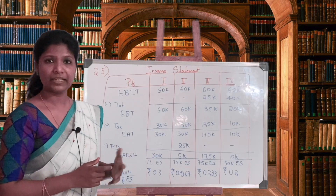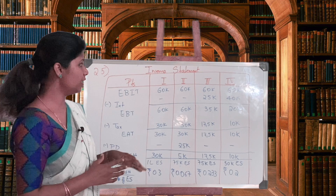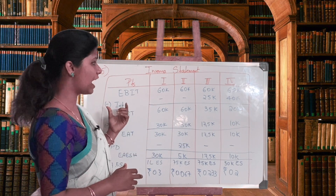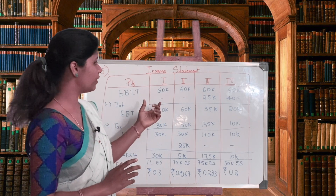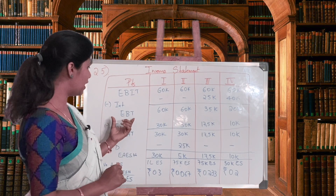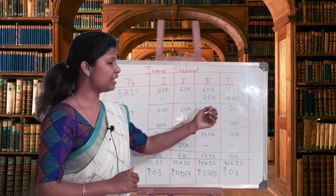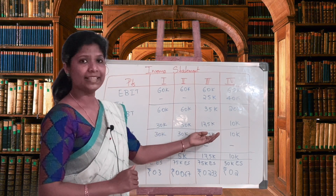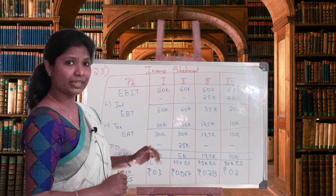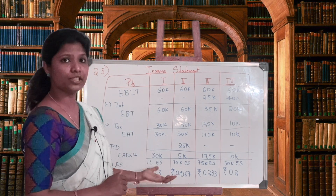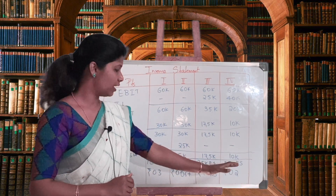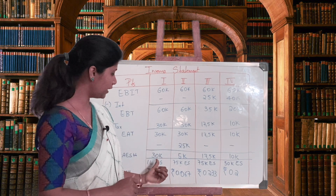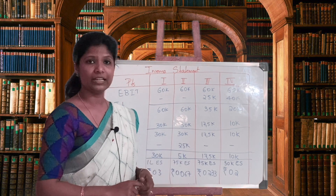We have completed the working notes. Now starting the income statement for all four plans. EBIT given in the question is 60,000, which is common for all plans. Interest applies only to plans three and four. We arrive at earnings before tax: 60,000, 60,000, 35,000, and 20,000 respectively. Tax is 50 percent, giving 30,000, 30,000, 17,500, and 10,000. The other 50 percent carries forward as earnings after tax. Preference dividend applies only to plan two — 25,000 rupees.